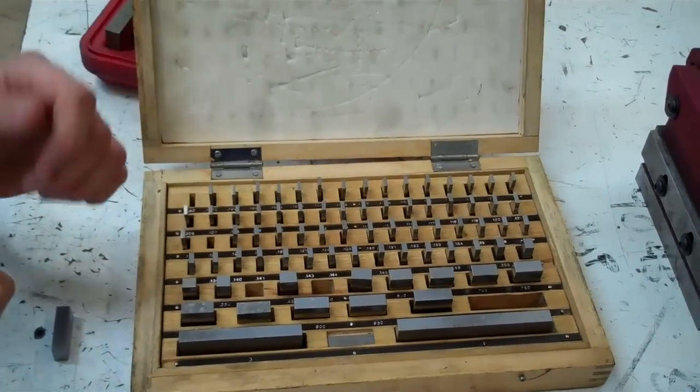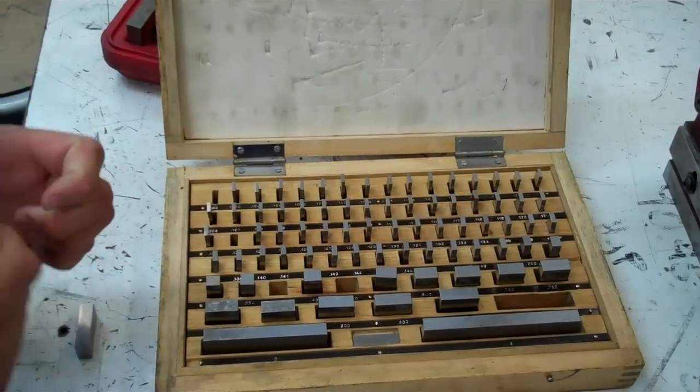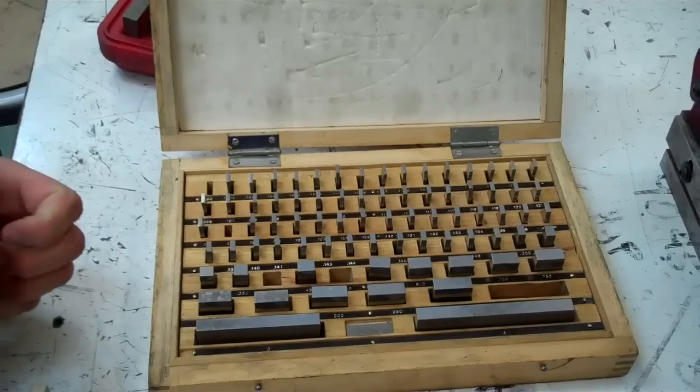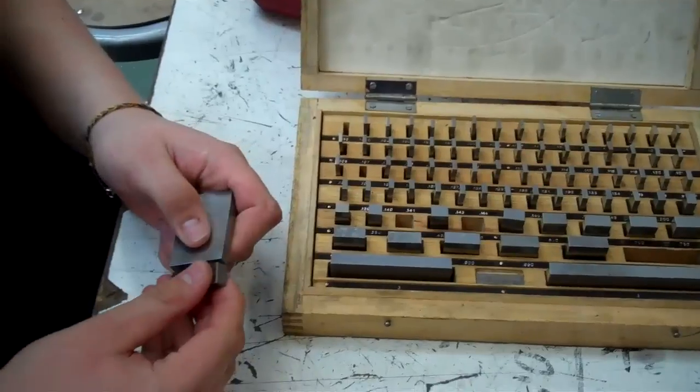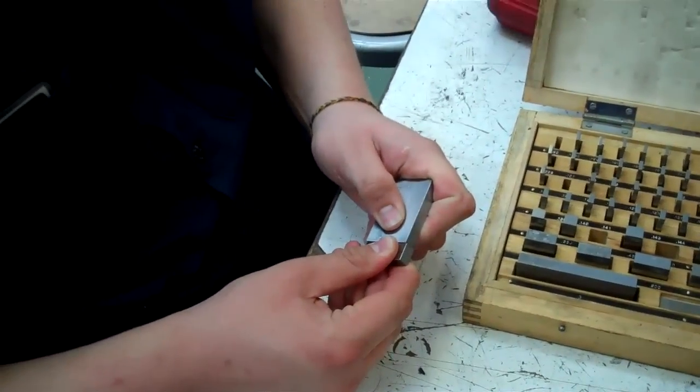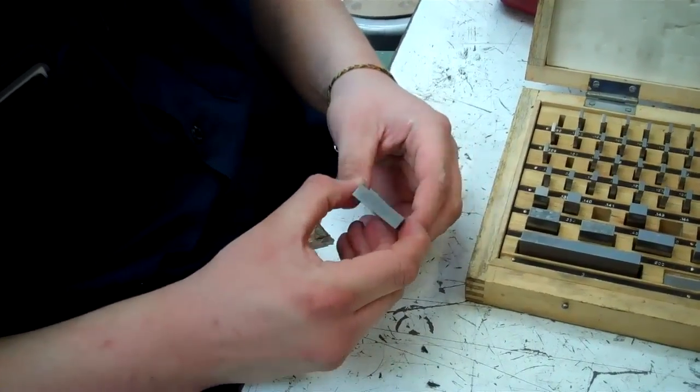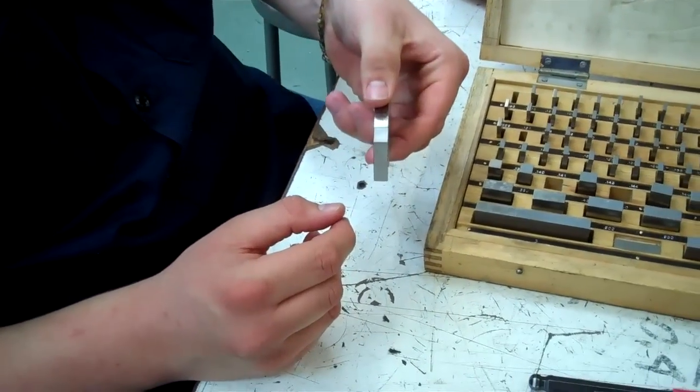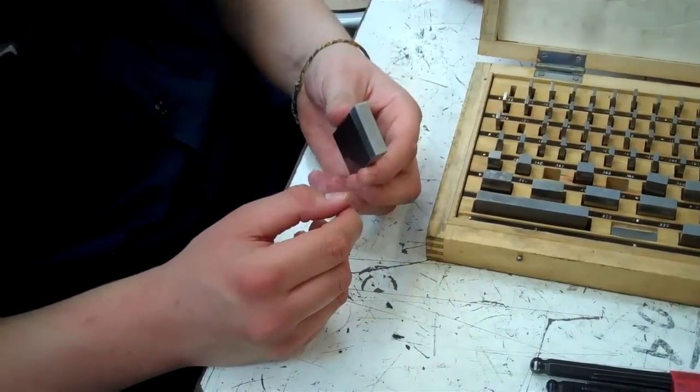The wringing process is where we take the gauge blocks and we clean off the ends. They have such a nice, smooth, ground finish that when we rub them together, they're actually going to stick so that you can see they won't fall off. You can hold them upside down. It doesn't fall off. That's wringing together.